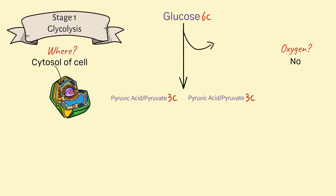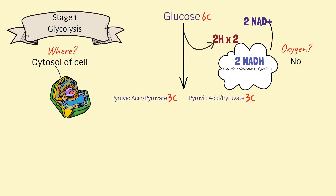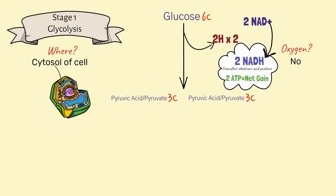Forming these pyruvic acid molecules involves the removal of pairs of hydrogen atoms. Hydrogen atoms contain electrons and protons, and these go to form NADH — that molecule that transfers electrons and protons. Remember to revise NAD+, how it combines with two electrons and a proton to form NADH. There's only a net gain of two ATP in glycolysis — not much energy made.